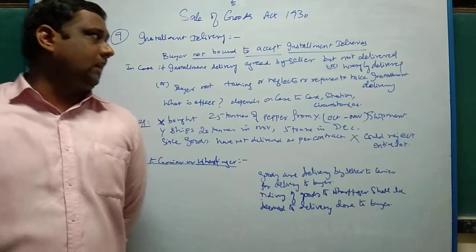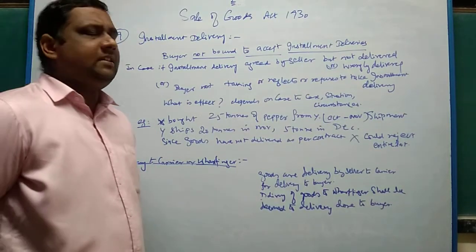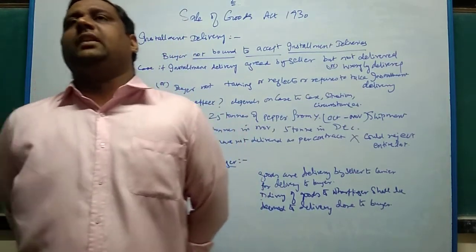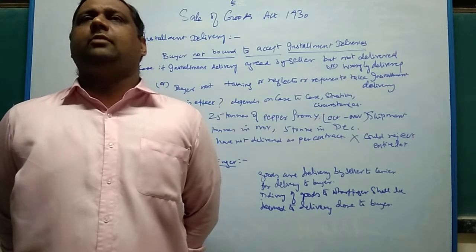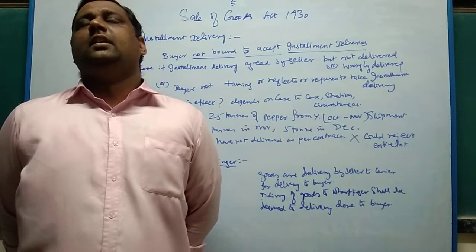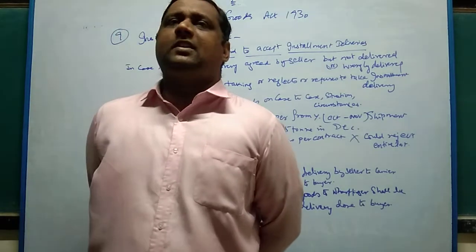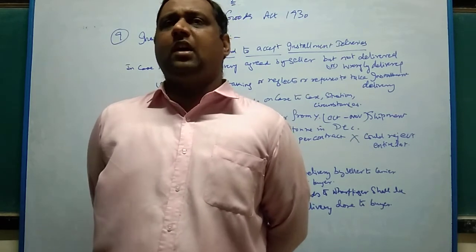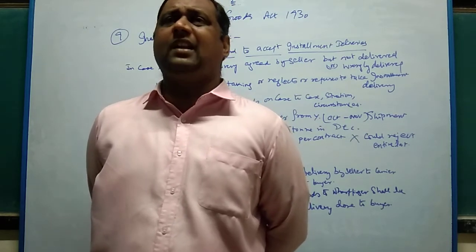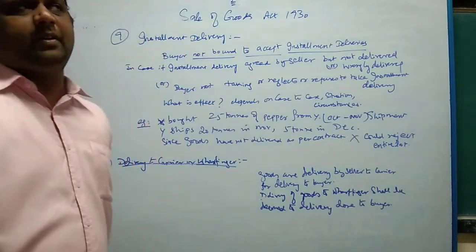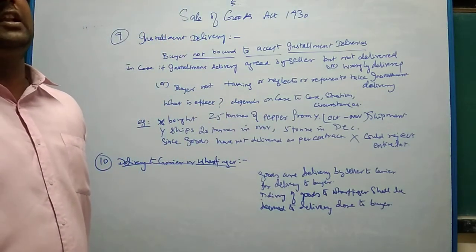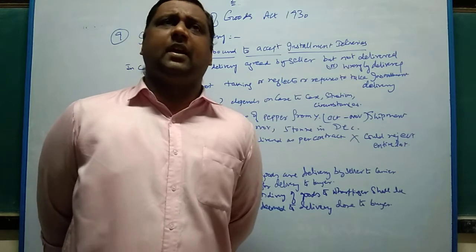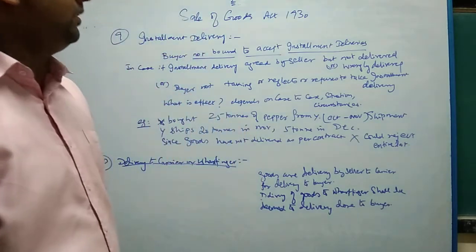Next topic: installment delivery. A delivery which is done in whole is said to be a complete delivery. When delivery is made in partial, lot by lot, or part by part, it is said to be an installment delivery. Generally speaking, the buyer is not supposed to accept installment delivery — the buyer should not accept installment delivery unless it is agreed upon. Generally the buyer will not accept installment delivery because it will be a loss for him; he cannot expect the remainder to be delivered and is always waiting for the rest of the goods.